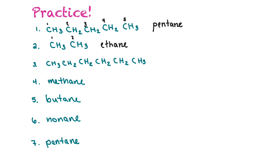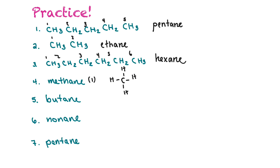The next one has six carbons — that's hexane. Number four is methane: meth is for one carbon, so we draw one carbon and four hydrogens, giving CH4, because every bonding pair is filled with hydrogen. And then butane is four carbons.